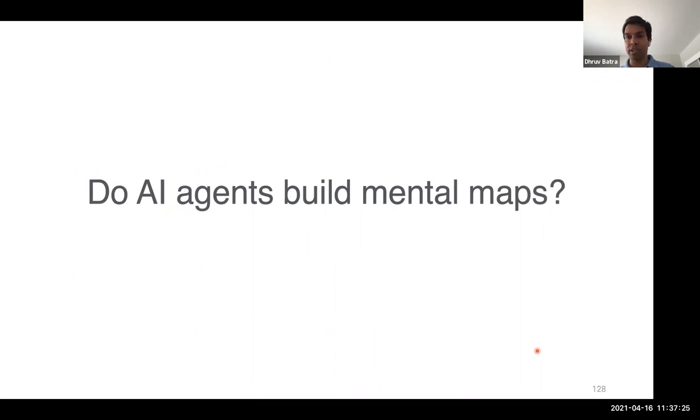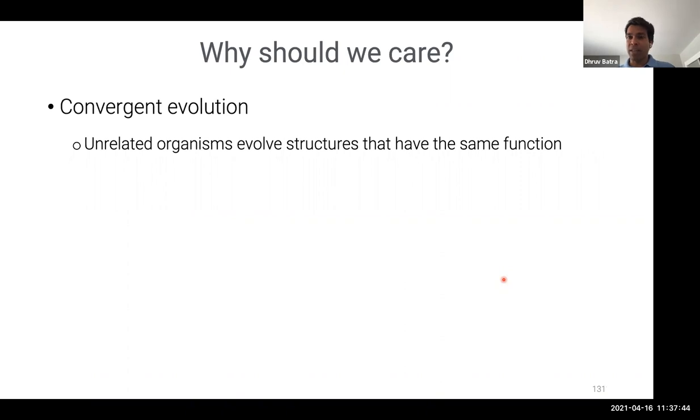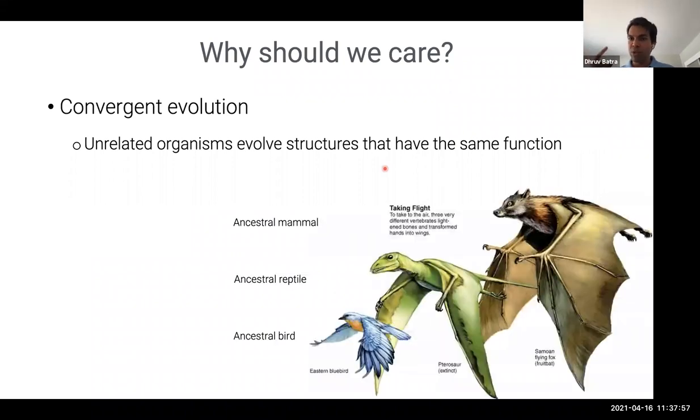And more specifically, do AI agents build mental maps? I just showed you navigation agents that did very well at navigation. Are they building mental maps? And why should we care about this question? I think for one, it would shed light on the inner workings of an otherwise perhaps not so scrutable navigation system. But I think more importantly, I'm fascinated by this idea of convergent evolution. Convergent evolution is this idea of unrelated organisms evolving structures that have the same function. So the evolution of the wing has happened in three completely different evolutionary branches.